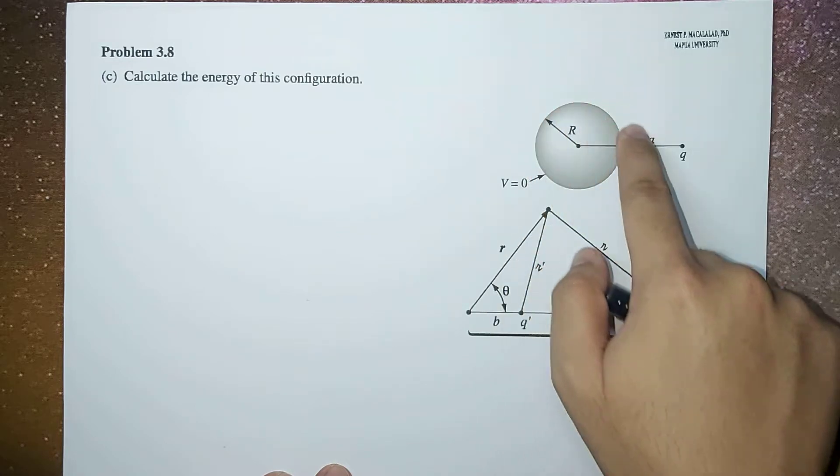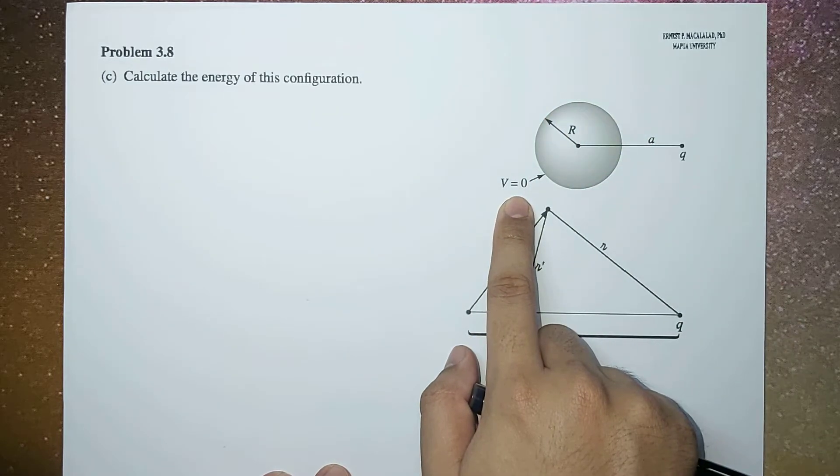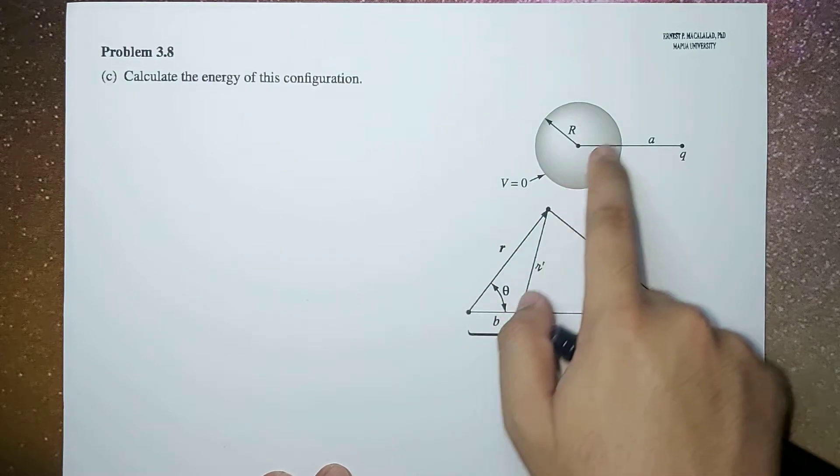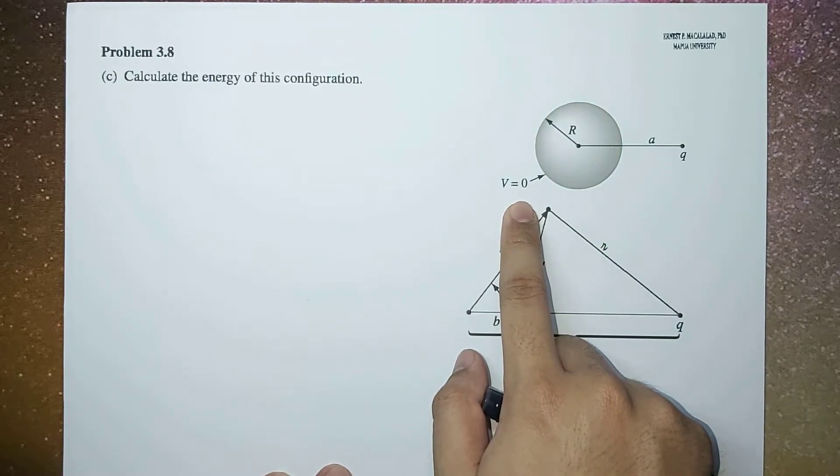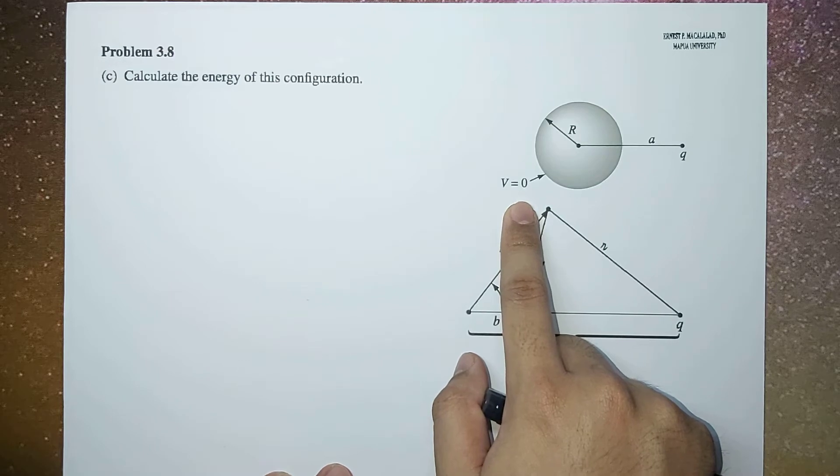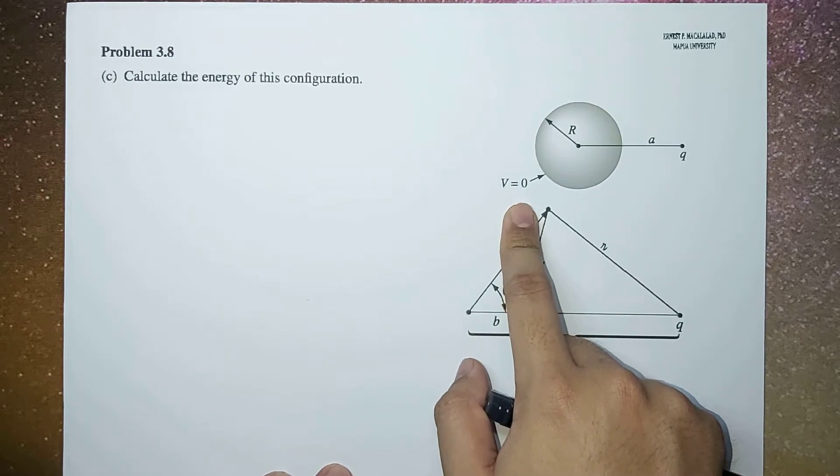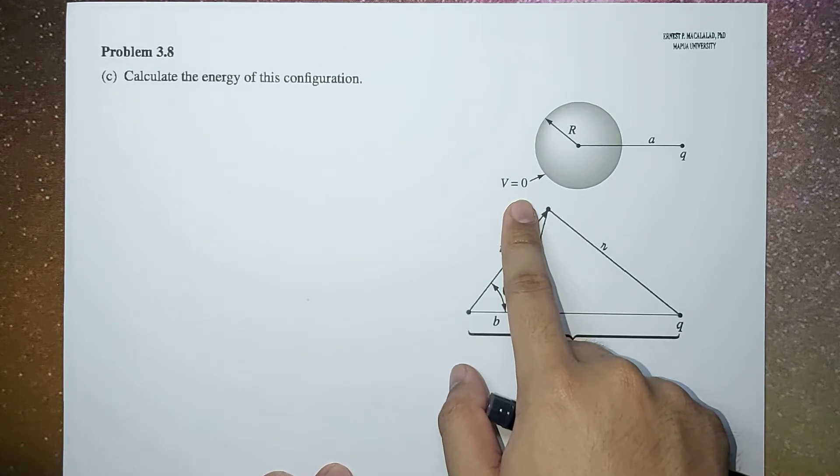We say this is a grounded sphere, so that means the potential at the surface of the sphere is zero—that's why it's called grounded. We were asked to find the potential outside the sphere.